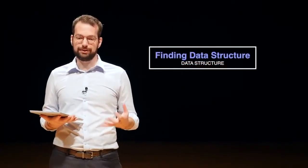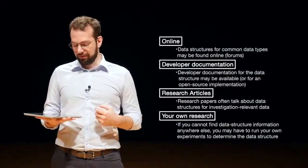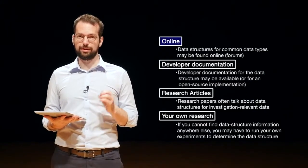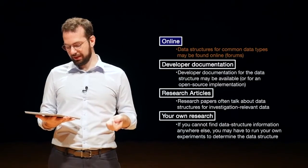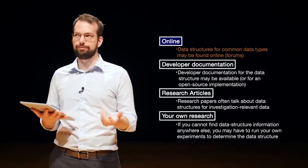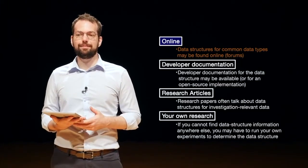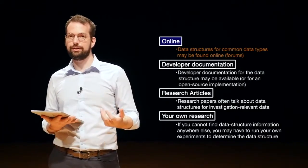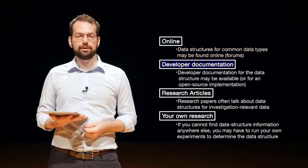So, how do we actually find data structures? The data structures are essentially the rules that we use to pull out meaning from the ones and zeros or the data. Finding the data structures, there's a couple different ways. First off is online. The first place you want to start is with an online search. Looking for the data structure for common data types may be found online in forums or other places where especially digital investigators are, because they also need to know what these data structures are to pull out meaning for their cases as well. If you can't find something with a quick online search, look for developer documentation.